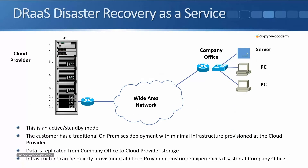Another example is DRaaS, disaster recovery as a service. In this example, we have an active standby model. The company has their own on-premise solution with their own servers there, and they also deploy minimal infrastructure at the cloud provider. Similar to backup as a service, the customer is running their servers in their own office and just using the cloud provider as a disaster recovery solution. They don't have servers permanently running at the cloud provider — it's just for disaster recovery.